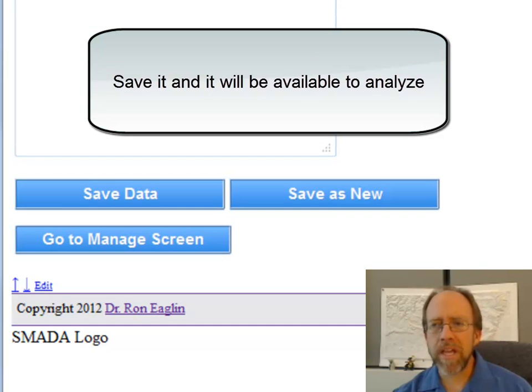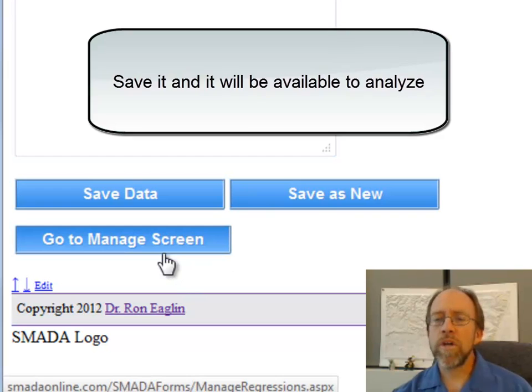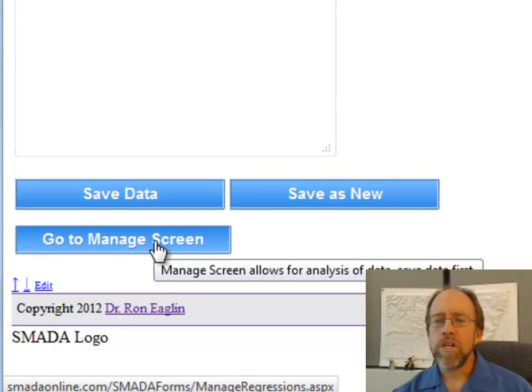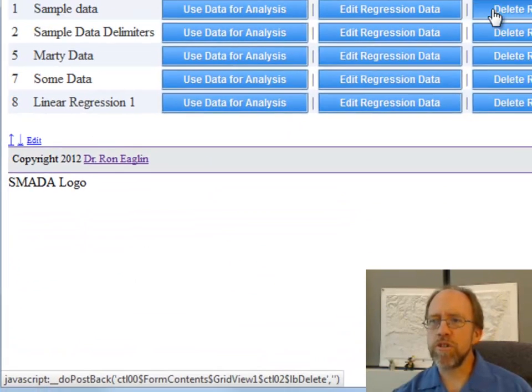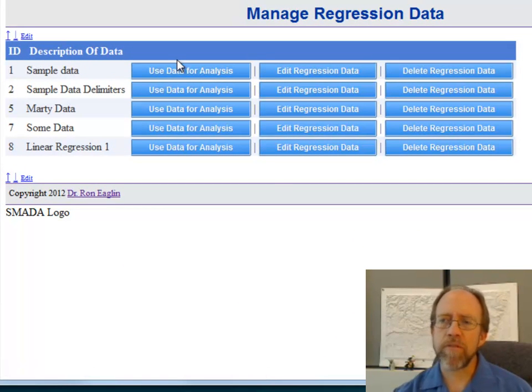Once you do that, you can save the data. If you have an existing set of data that you want to make as a new set of data, you save it as new. Once you've saved it, you can go to the manage screen, and the manage screen allows you to delete or use that data back for the analysis. And that is the real basics of regression.